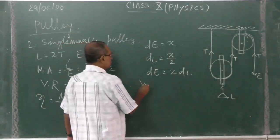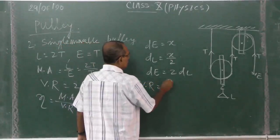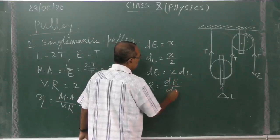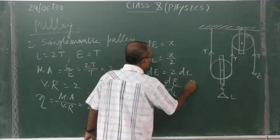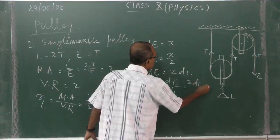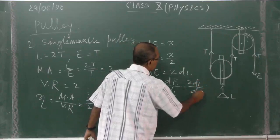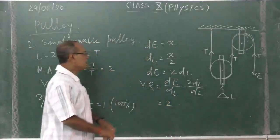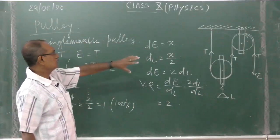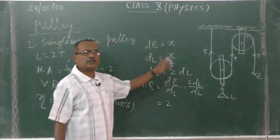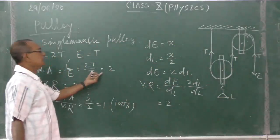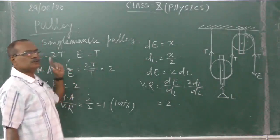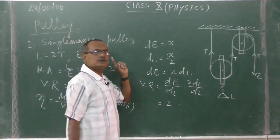So then velocity ratio, VR is equal to dE by dL, that is equal to 2. Now keep in mind, if we are considering actual practice, actual case, so then what happen, mechanical advantage will be less than 2, but velocity ratio will be always equal to 2.